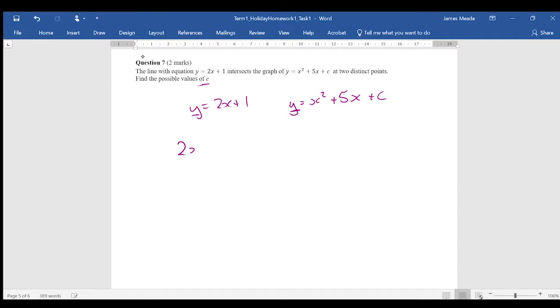I'm going to make 2x plus 1 equal to x squared plus 5x plus c and now I'm going to rearrange to get all my x's onto one side of the equation. So I'm going to minus the 2x from this side, so I'm going to get x squared plus 3x, and I'm going to minus the one, so I'm going to have plus c minus 1 equals 0.